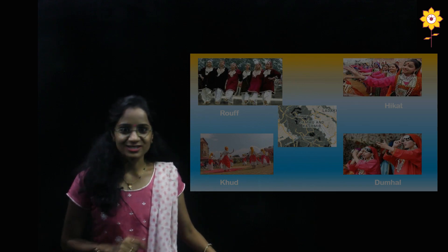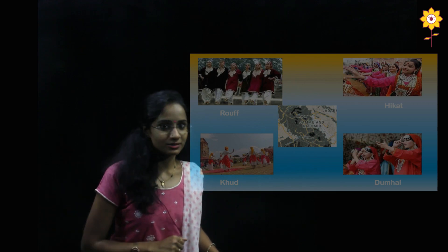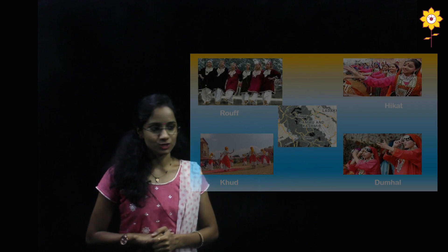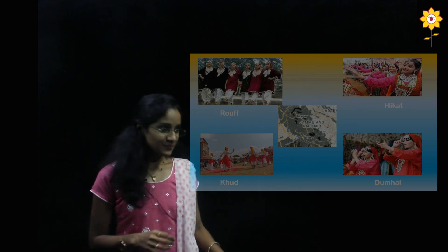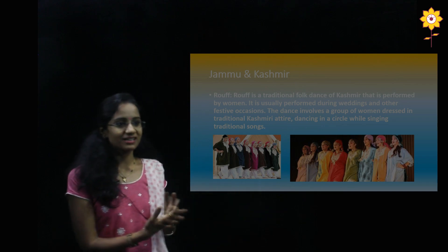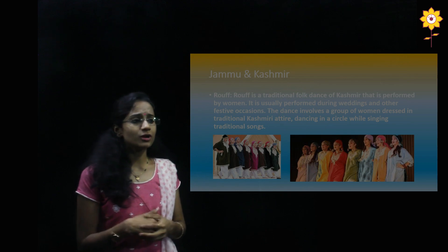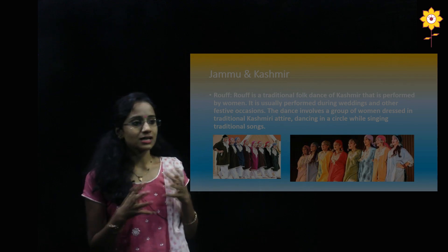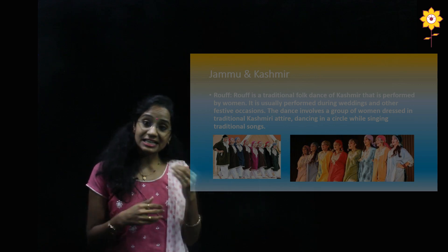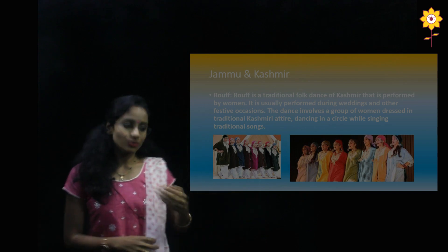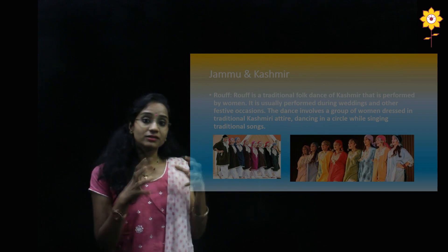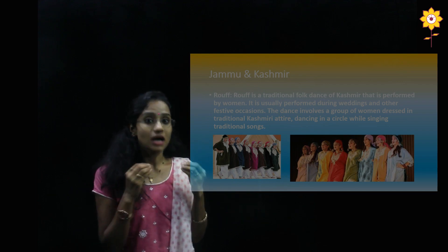Now let's look into the folk dances of India. We'll start our journey from the northern part — Jammu and Kashmir. The folk dances of Jammu and Kashmir are Rouf, Kud, and Dumal. Rouf is a traditional folk dance of Kashmir performed by women, usually during weddings and other festive occasions. It involves a group of women dressed in Kashmiri attire dancing in a circle while singing traditional songs — the attire, costume, and song all together contribute to making this art form beautiful.